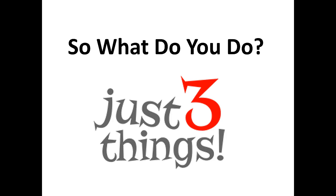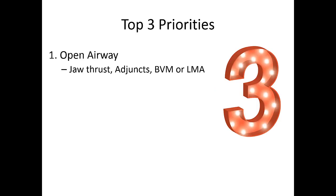There are just three things to remember if you find a patient in trauma arrest. First, open that airway. You've got your patient lying on the concrete, unconscious, unresponsive, no pulse but a PEA. Do a jaw thrust, use your adjuncts, and try supplemental oxygen. They might just be hypoxic and need a little assistance.